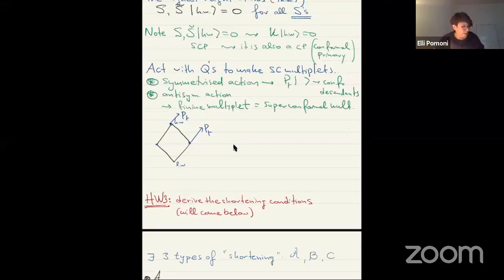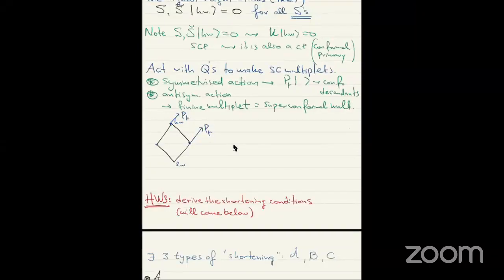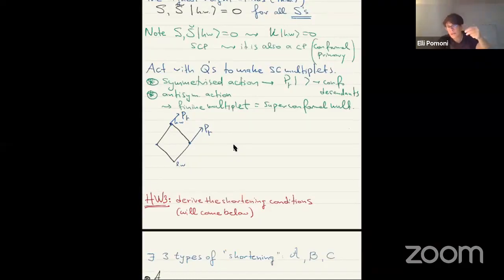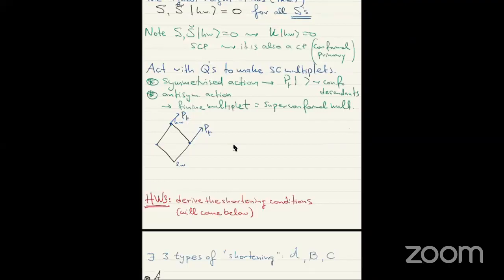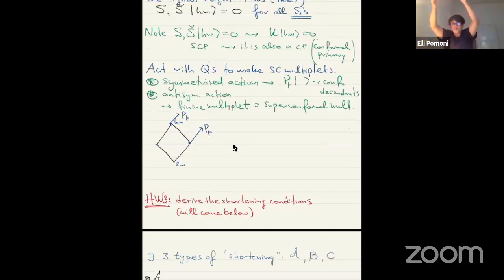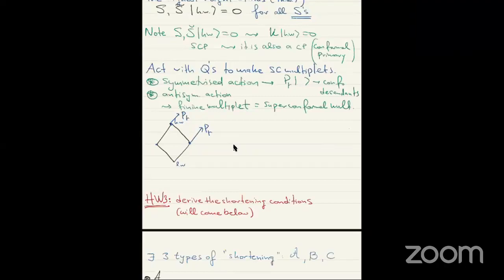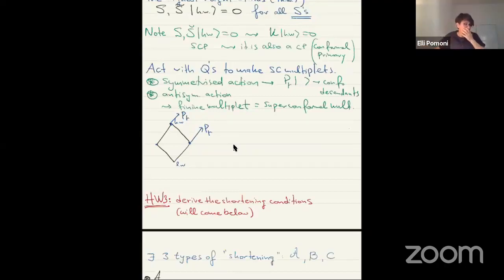Is this good and clear? Question: did you say there could be an infinite number of conformal descendants? Yeah, because with momenta you can act as many times as you like. You can go up but you cannot go down — K is the lowering operator.